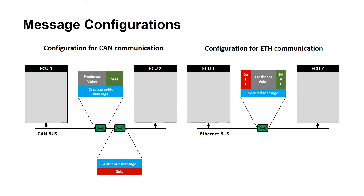As we know, the CAN protocol has only 8 bytes of data frame, which is limited, and appending security information may lead to lesser space for data. So there is a feature called Secured PDU Collection in SecOC where we can configure to send data and security content separately. But when verifying the data, both the messages should be received at the receiver end. In case of Ethernet, since there is no restriction on data length, we can configure to send all the information in a single message.